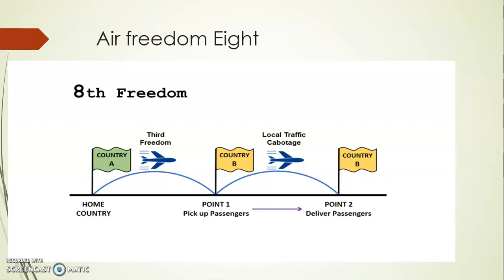The Eighth Air Freedom means that an airline of country A can take passengers between two places within another country, while still connecting through the home country. For example, an Air France flight coming from Paris could land in Delhi and then continue to Chennai or any other city within India. This operation connecting two places in a foreign country via the home country is known as the Eighth Air Freedom.